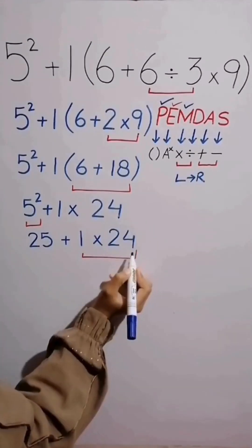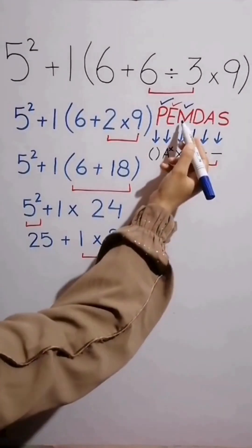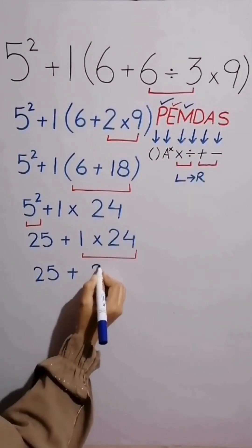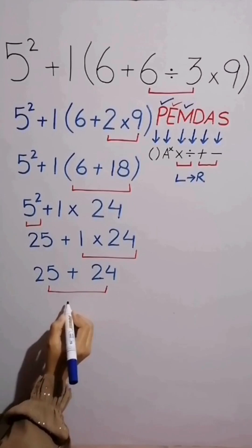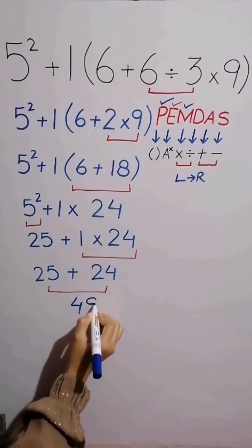In this step, we simplify this multiplication because multiplication comes before addition. 1 times 24 equals 24, and then ultimately 25 plus 24 equals 49.